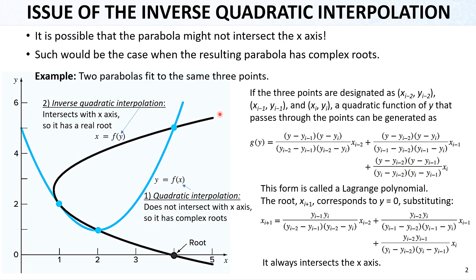On the other hand, we can use the inverse of the function. As you can see, the inverse does intersect the x-axis. We fit another quadratic polynomial through the same three points, but in this scenario it can cross the x-axis and gives us the root. If the regular quadratic doesn't intersect, the inverse will. That's why it's called inverse quadratic interpolation — we use the inverse to ensure intersection with the x-axis.